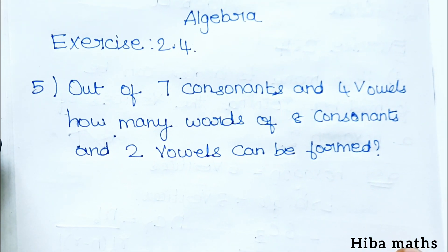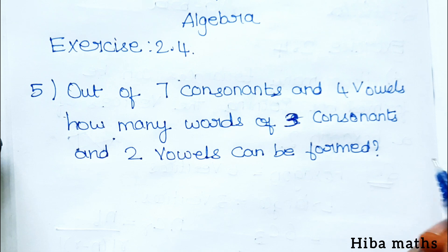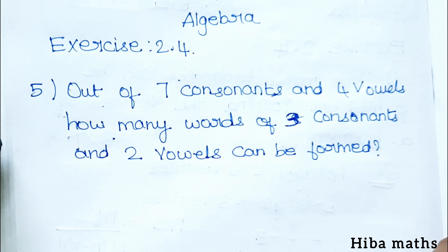Out of 7 consonants and 4 vowels, how many words of 3 consonants and 2 vowels can be formed?